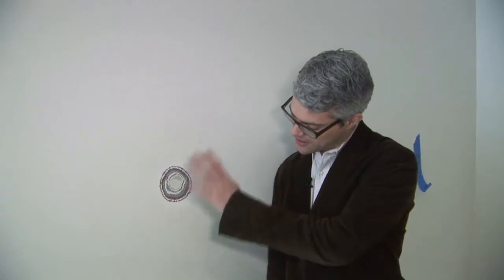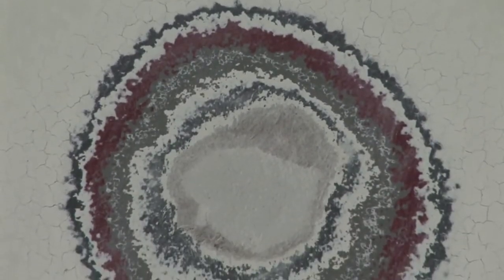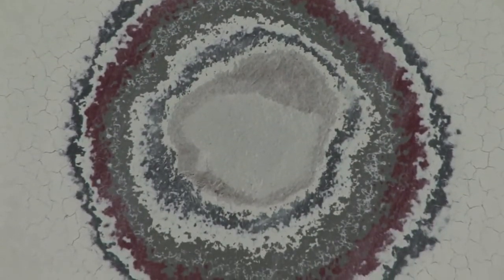All we do is essentially sand down a portion of our gallery wall to reveal the successive layers of paint that have been applied over the years in varying exhibitions that we've had in this same space.